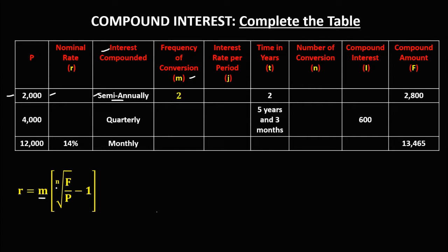For N, the number of conversions, we solve N as M times the time. Since M is equal to 2 and the time is equal to 2 years, so 2 times 2, N is equal to 4.